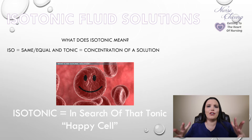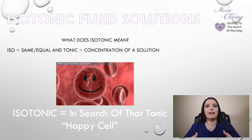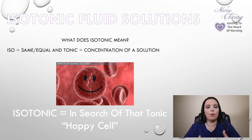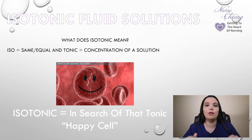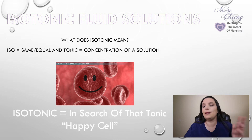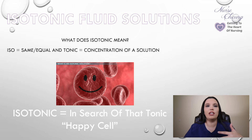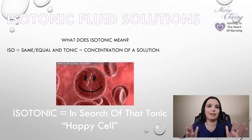Let's start off with our isotonic solutions. What does isotonic mean? ISO stands for same or equal, and tonic always stands for concentration of a solution. An easy way to break that down is to think 'in search of that tonic' — those are our happy cells. These are the solutions that flow easily from within the cell to outside the cell, and they don't change any configuration of the cell at all.